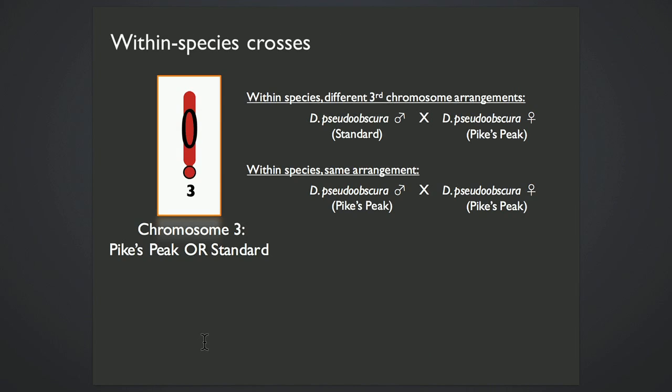So recently I've been analyzing the third chromosome data, where we have either Pikes Peak or Standard arrangement, just names of the inversion difference. And the interspecies cross is heterozygous for this inversion. And then within-species, we have pseudoobscura Standard crossed to pseudoobscura Pikes Peak, so an inversion heterozygote, and Pikes Peak crossed to Pikes Peak. So that one is completely collinear. There's no inversion differing on this chromosome.